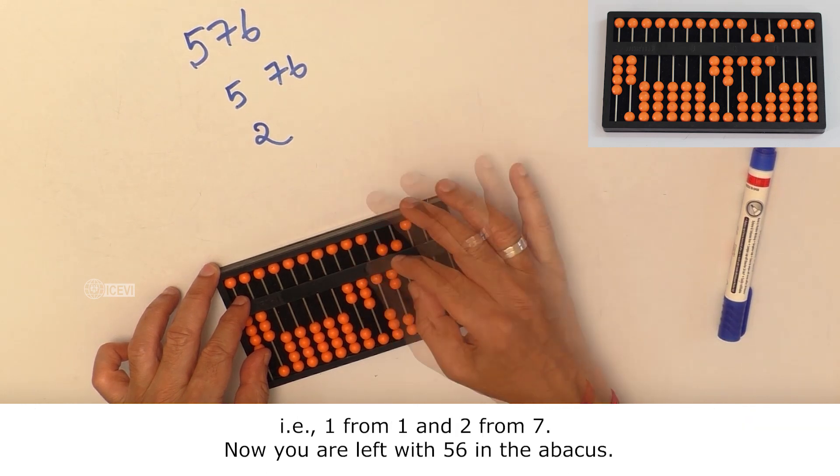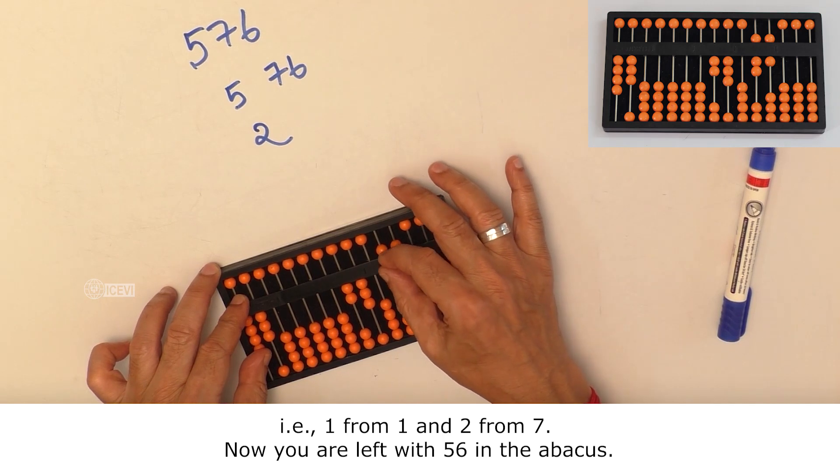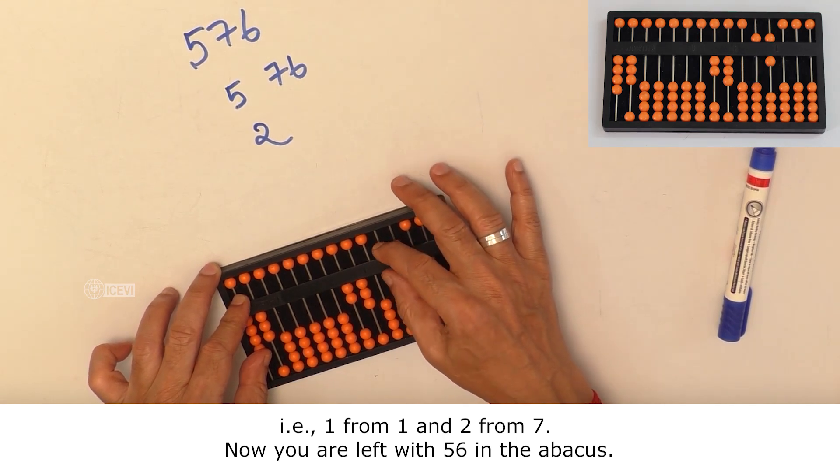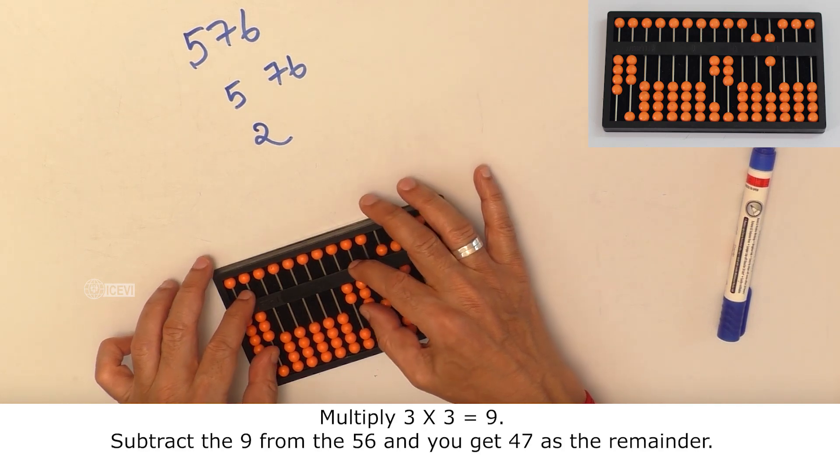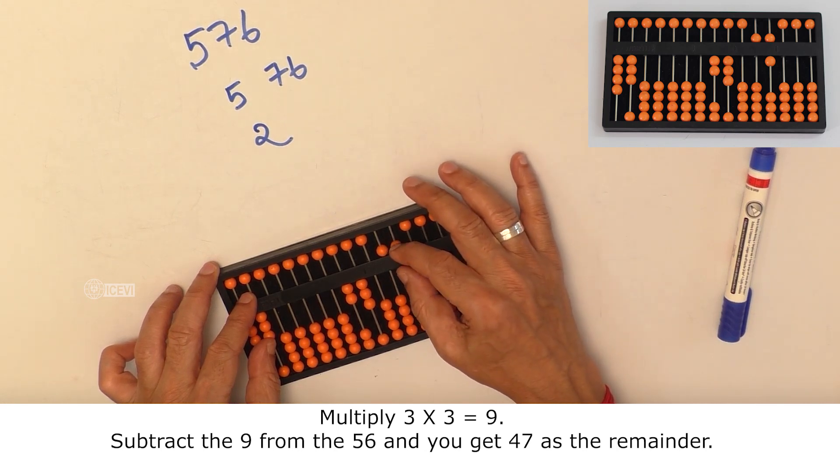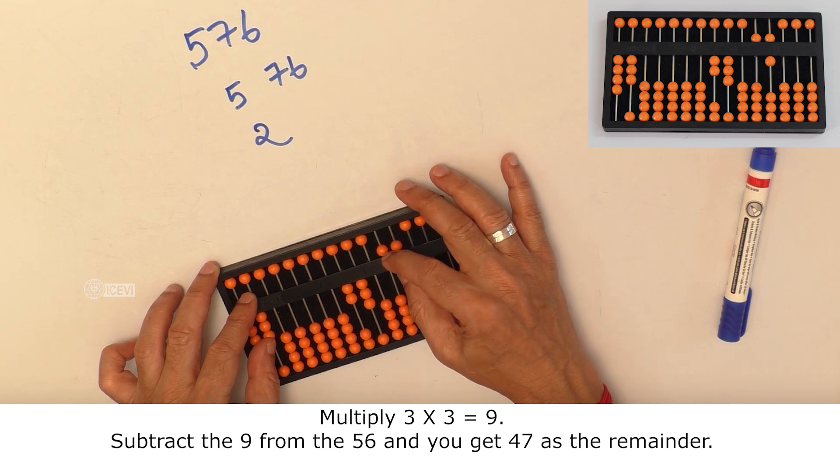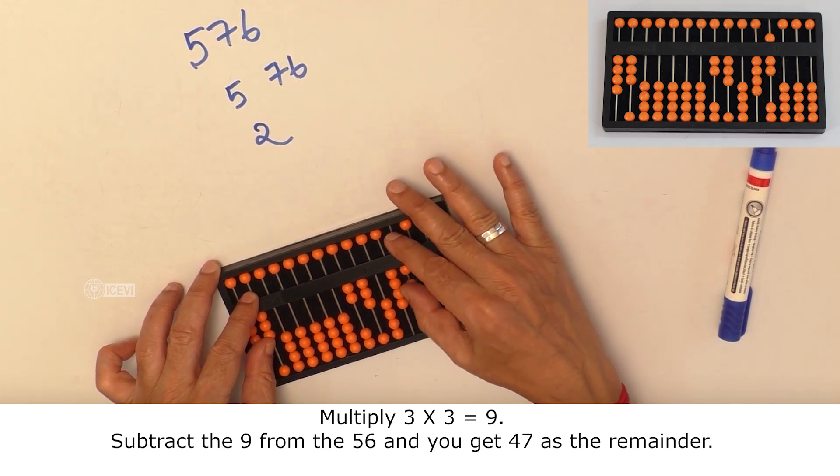That is, 1 from 1 and 2 from 7. Now you are left with 56 in the Abacus. Multiply 3 and 3 which is 9. Subtract 9 from 56 and you get 47 as the remainder.